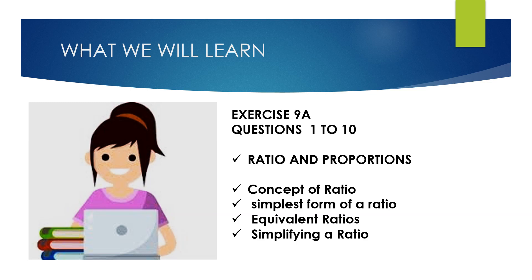Today we will learn and solve exercise 9a, questions 1 to 10 of chapter 9. Chapter name is Ratio, Proportion and Unitary Method, and topics are concept of ratio, simplest form of a ratio, equivalent ratios and simplifying ratios. Let's solve some questions.